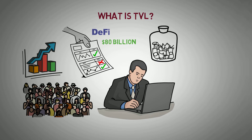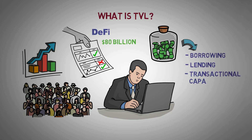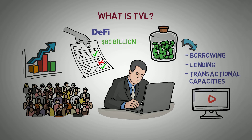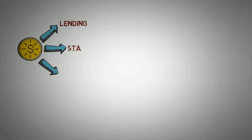TVL refers to the current value of cryptocurrency assets locked in staking, lending, or liquidity options. It represents all crypto funds in borrowing, lending, and transactional capacities. For any crypto project, the TVL is the value of funds staked in a blockchain node with a proof-of-stake consensus mining method, or funds for lending or a liquidity pool. If you want to know what proof-of-stake and liquidity are, check out the videos in the description link below. TVL is the current worth of a crypto token in lending, staking, and liquidity.